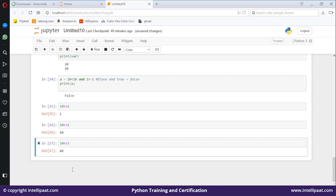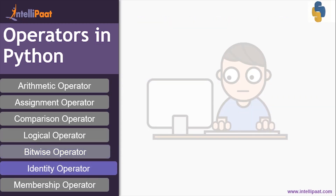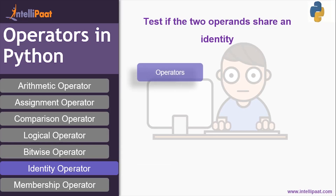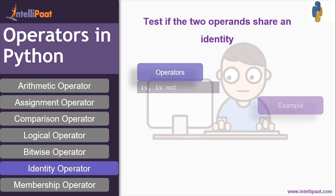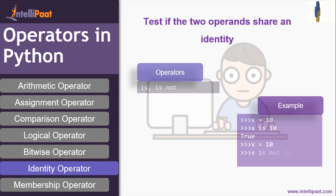Now let's move ahead to the identity operator. These operators are used to test if two operands share an identity. The operators which are part of it are 'is' and 'is not' — these are two keywords. For example: x = 10, then x is 10 is True; or x is not 10 is False. It is used simply to test whether operands share an identity or not.